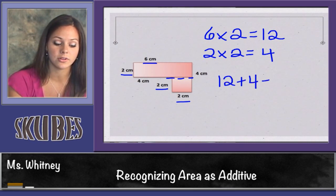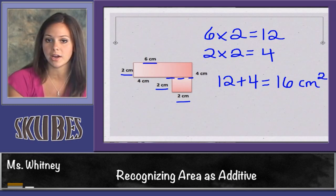If I add 12 plus 4, I get a total area of 16 square centimeters or centimeters squared.